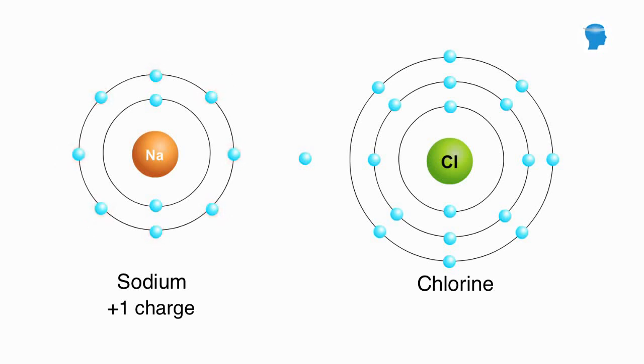Chlorine, on the other hand, tends to gain an electron, since its outer shell already has 7. When chlorine gains an electron, it becomes slightly negative.